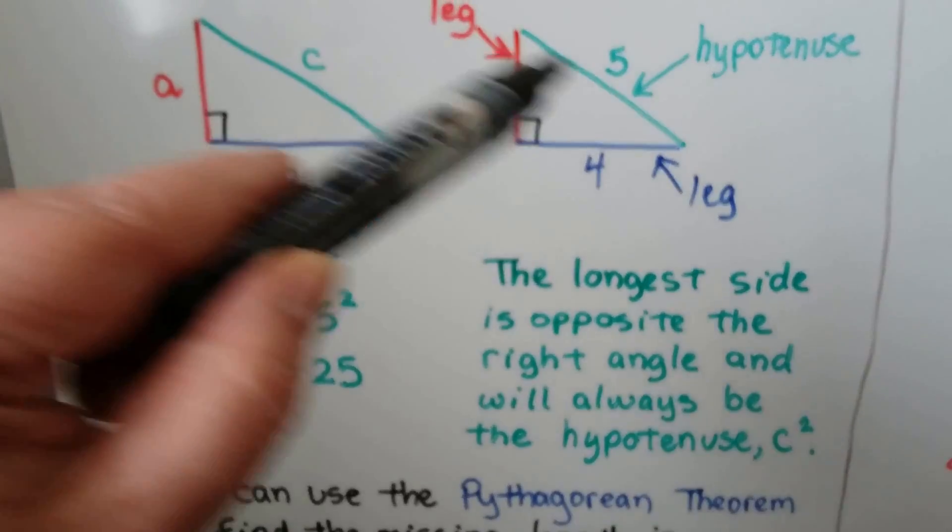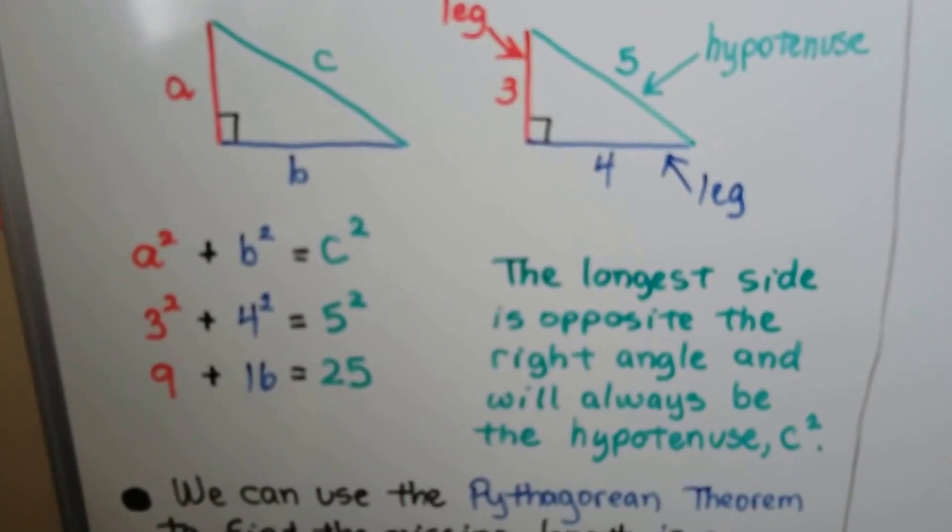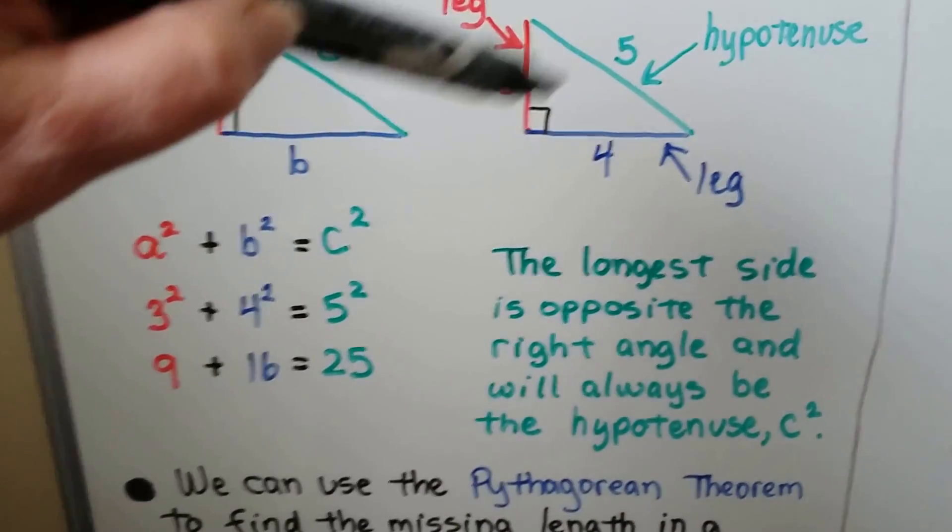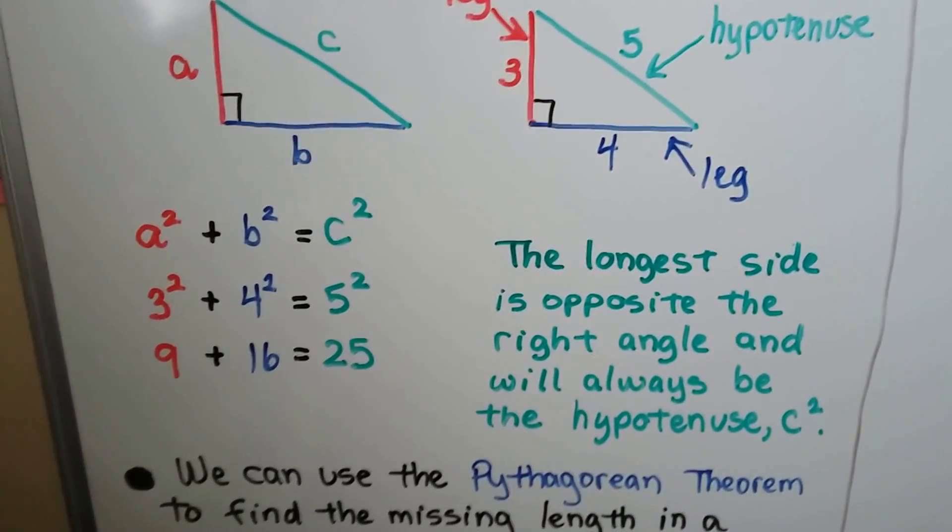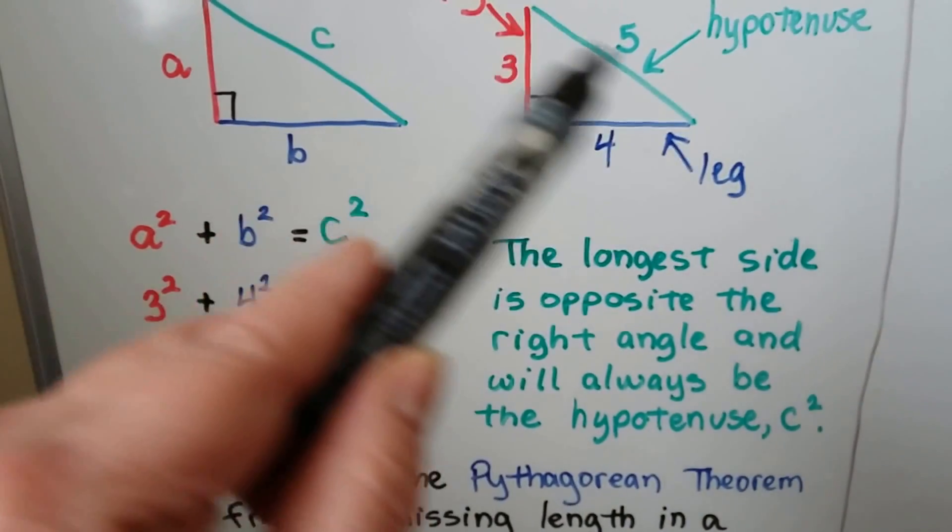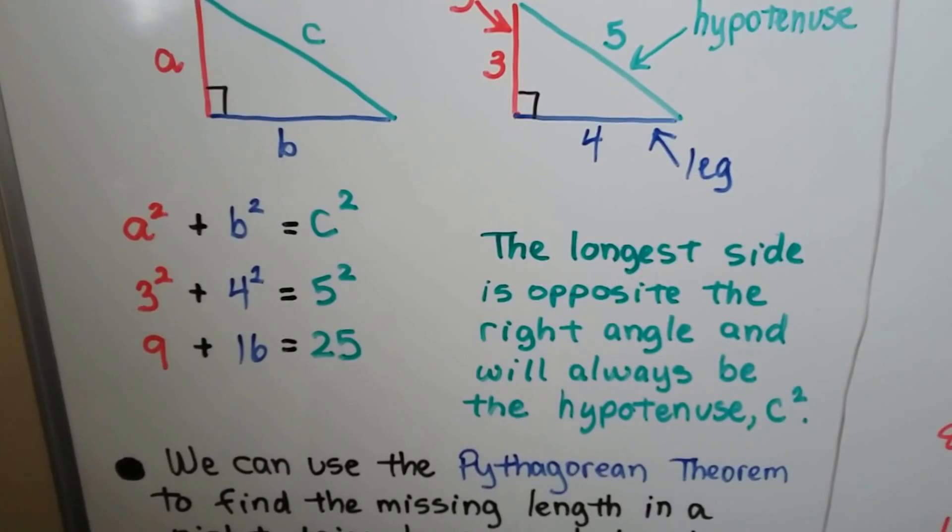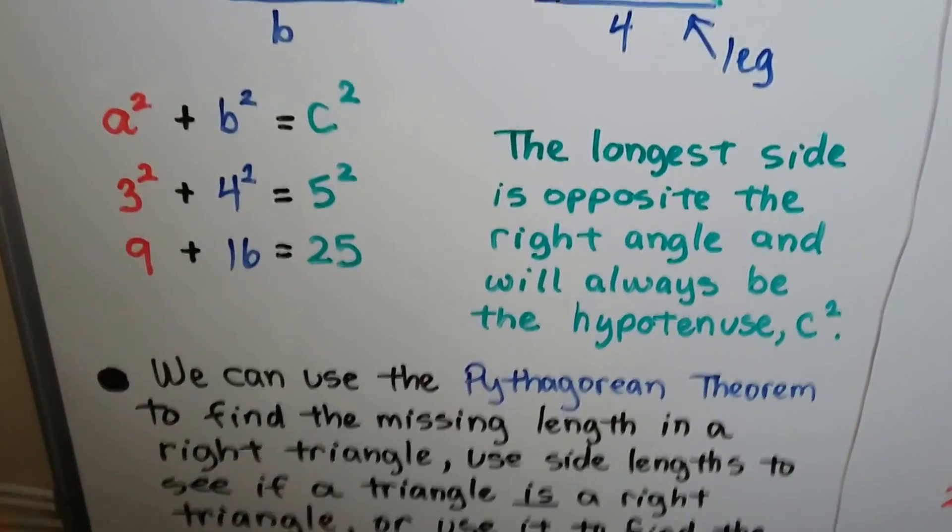And the longest side, this hypotenuse, the longest side is opposite the right angle. See how it's across from it? It's opposite. And this long side will always be the hypotenuse. It'll be that c squared in the formula.